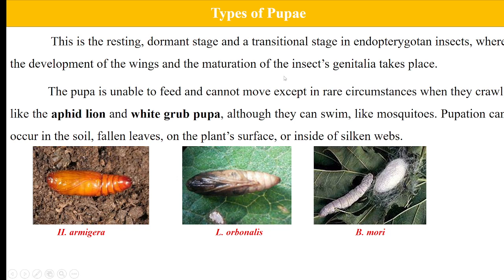This is all about the types of larvae. Coming to the pupae — pupae is the third stage in the development of endopterygote insects. It is an inactive stage outwardly, but active inwardly. They are incapable of feeding and walking, but all the developments required for an adult are being held inside this pupae. In some circumstances they can crawl or move, like in case of aphid lion and white grub pupae, and they can swim in case of mosquito — the mosquito pupae or tumbler. Pupation can occur in the soil in case of Helicoverpa armigera, on fallen leaves or plant surface, inside fruits like brinjal fruit and shoot borer, and inside silken webs, that is Bombyx mori, the cocoon of silkworm.